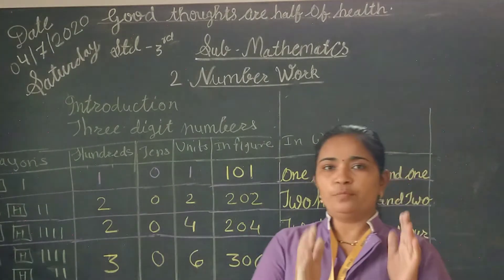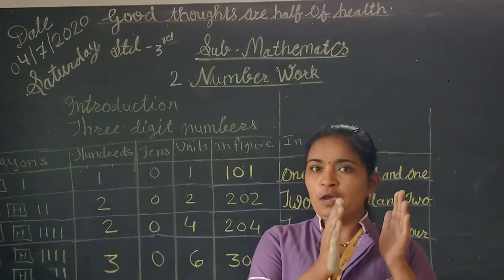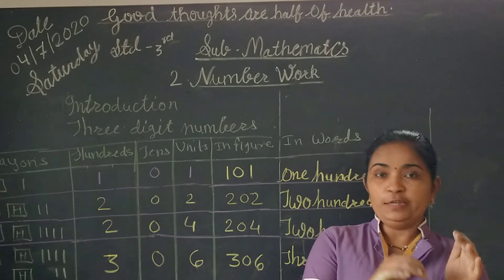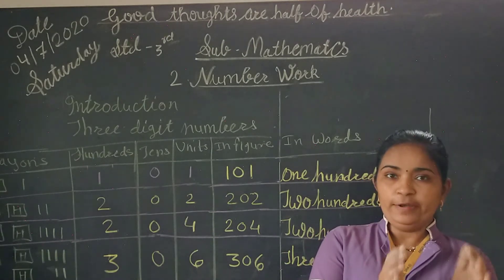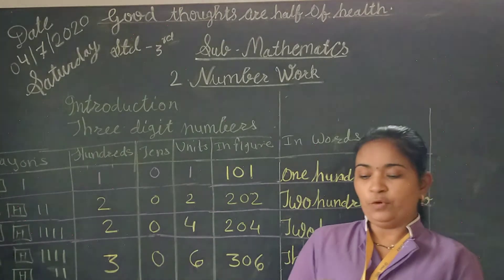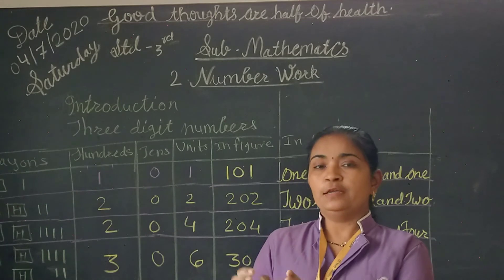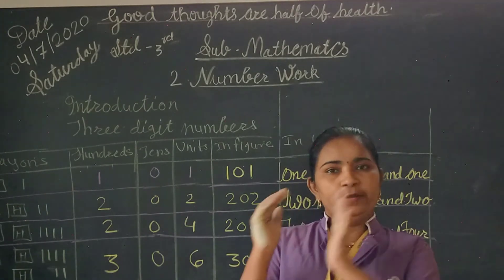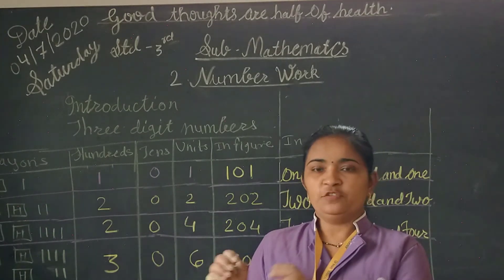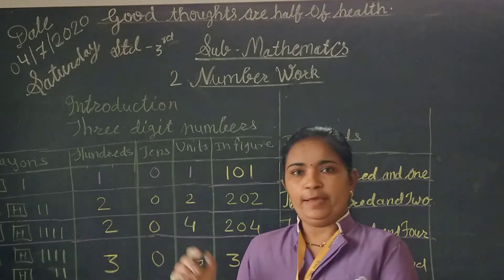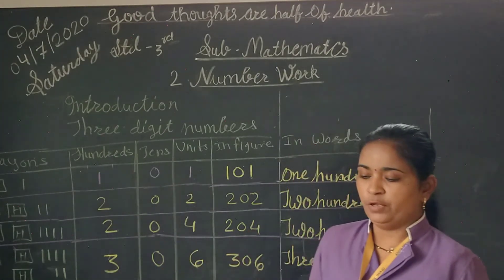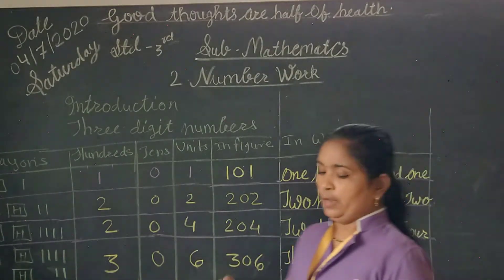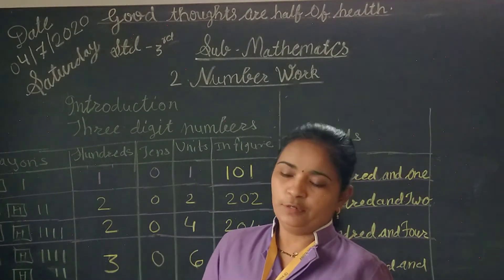For example, one big crayon box has one hundred crayons, and one smaller box has ten crayons. Hundred and ten together make one hundred and ten. In figures, we write 1-1-0, meaning one hundred and ten.